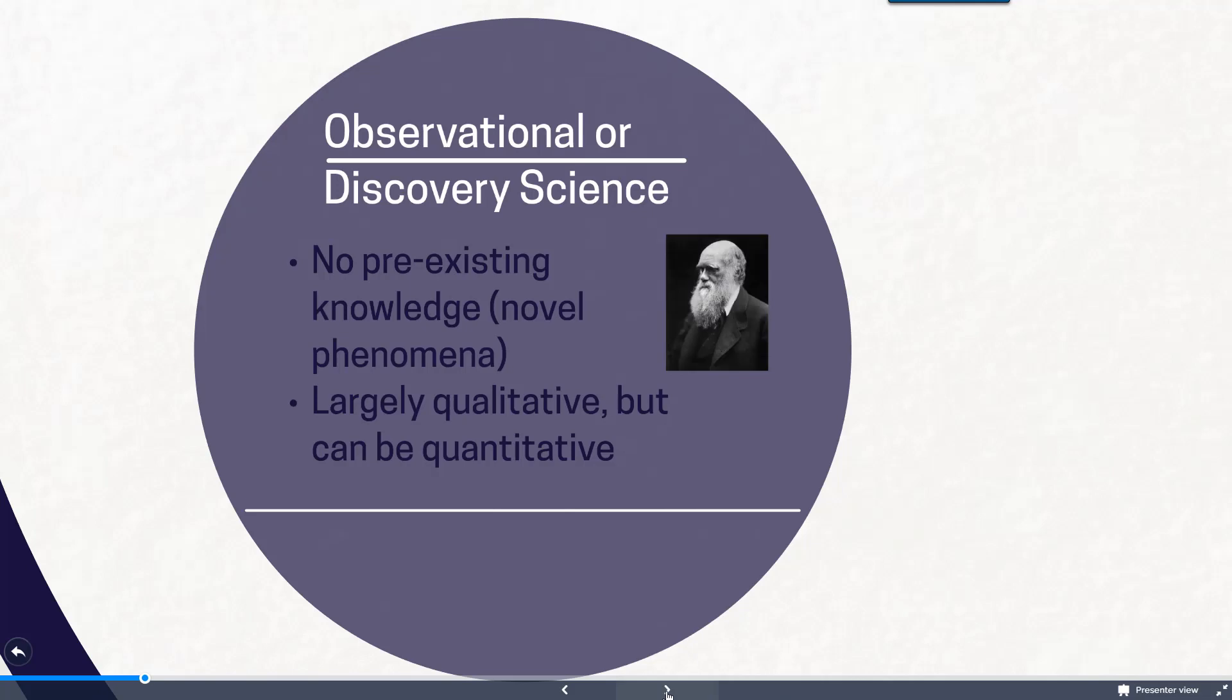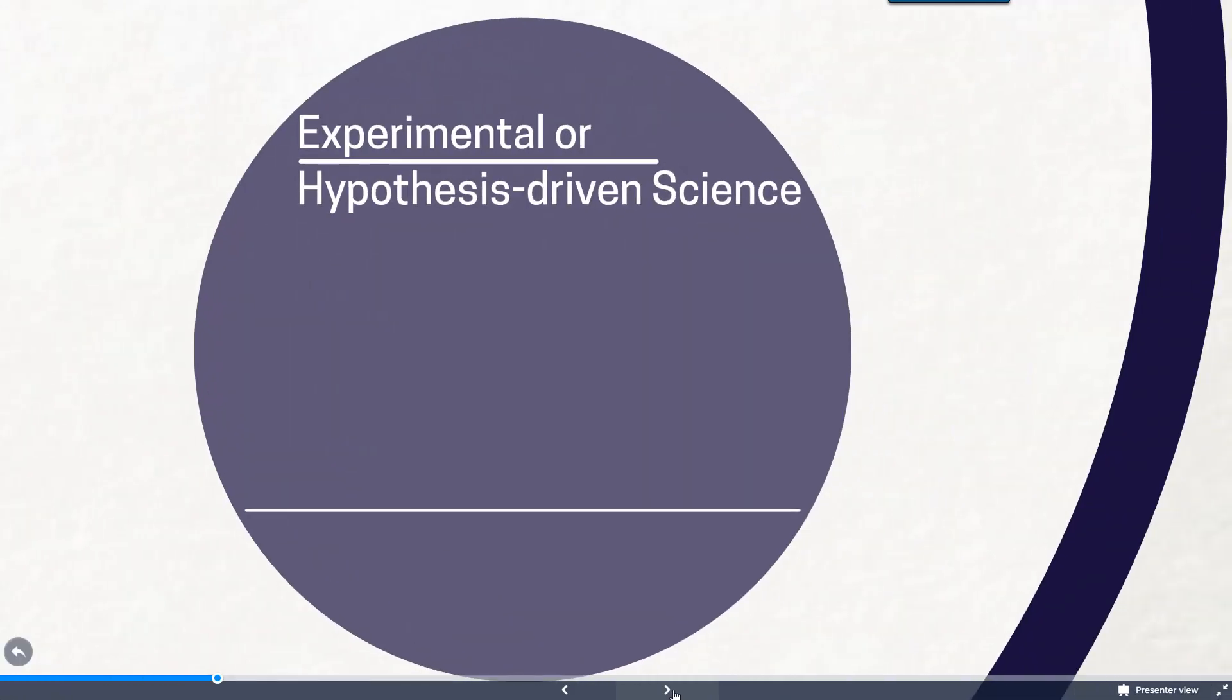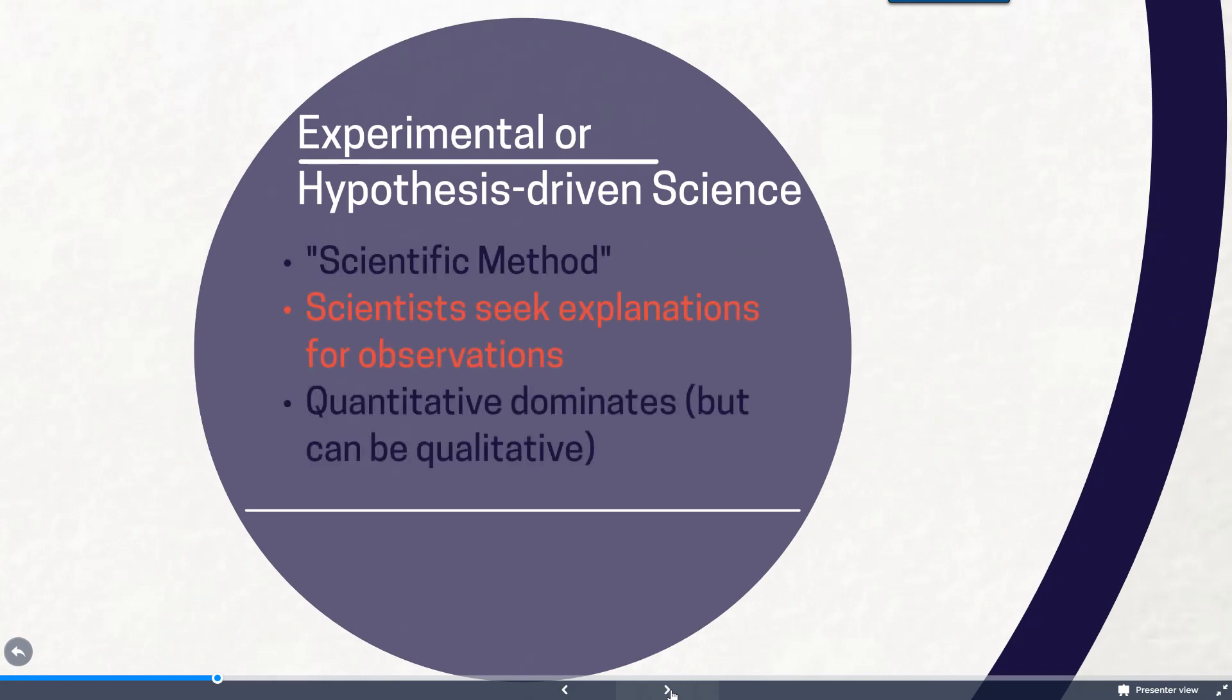And our best example is Charles Darwin's body of research exploring a large amount of the nature found around the world and describing that. The second category of research is termed experimental or hypothesis driven science, and in this particular category it's what we think of as the scientific method where scientists are going to seek explanations for their observations.